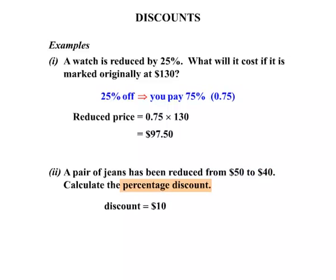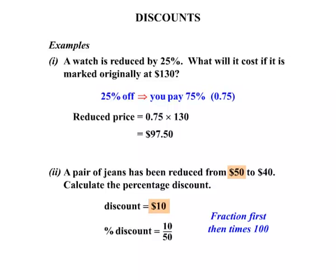Now the percentage discount. To write the percentage discount we need to think of it as a fraction first, then we're going to times that by 100. So the fractional discount is $10 over the original price, $50. So 10 over 50. Then changing a fraction to percent, times by 100. And then we calculate that we get 20%. So 20% there is our percentage discount.